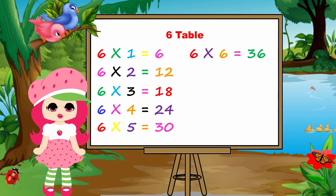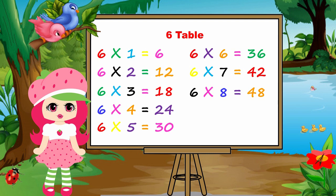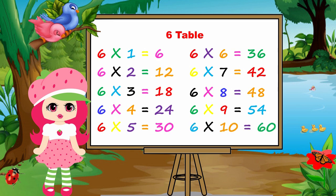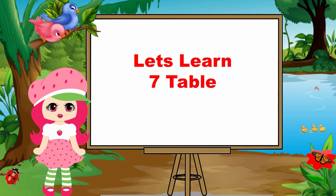Six sixes are thirty-six. Six sevens are forty-two. Six eights are forty-eight. Six nines are fifty-four. Six tens are sixty. Today we will learn the table of seven.